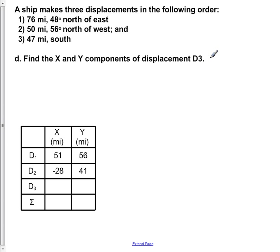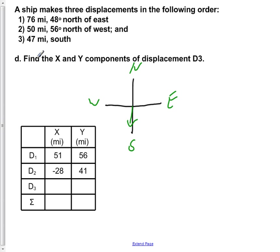Part D: find the x and y components of displacement D3. With our axes labeled north, east, west, and south, we see that D3 is just 47 miles south. There is no horizontal component, so D3x equals zero. Since it points in the negative y direction with magnitude 47, the y component is negative 47 miles.